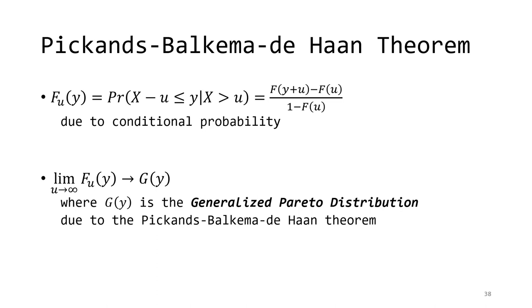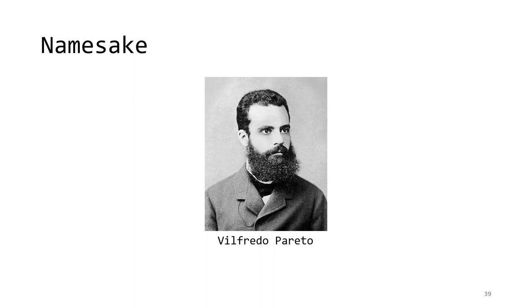The Pickands-Balkema-de Haan theorem, also called the second extreme value theorem, gives us the probability distribution for the values of those excesses. The bottom line is that if you select a sufficiently high threshold, the values of the excesses will converge to the generalized Pareto distribution. The generalized Pareto distribution is a three-parameter distribution where one parameter is the value of the threshold selected for a PDS analysis. It is named for Vilfredo Pareto, who was a civil engineer by trade, but more famously an economist who gave us the 80-20 theory of income distribution that shows up in many other applications as well.